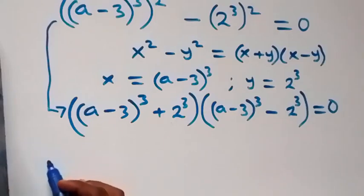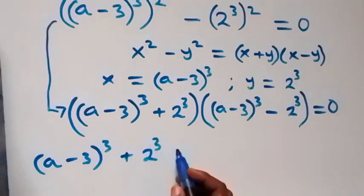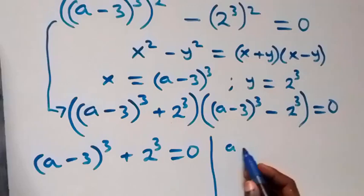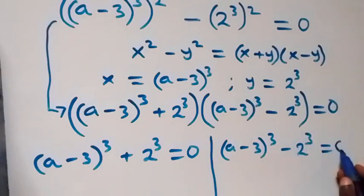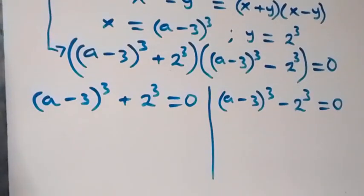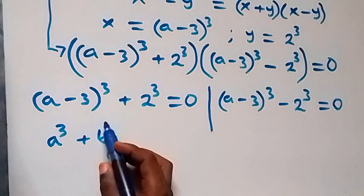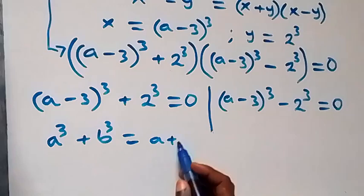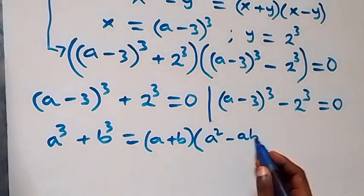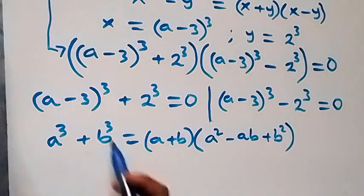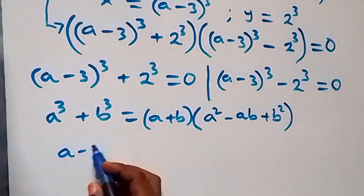This equation can be written as (a minus 3) raised to power 3, plus 2 raised to power 3, into bracket, times (a minus 3) raised to power 3, minus 2 raised to power 3, equals to 0. From here we have two possible cases. The first one: (a minus 3) raised to power 3 plus 2 raised to power 3 equals to 0. This follows from the sum of two cubes, a cubed plus b cubed, which can be written as (a plus b) times (a squared minus ab plus b squared).